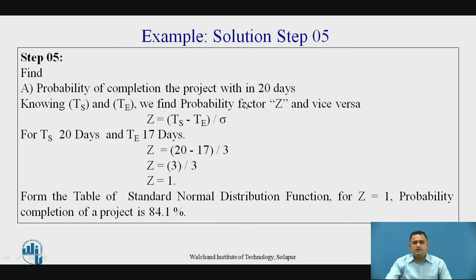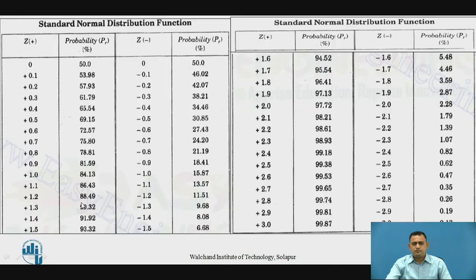Ts is 20 days (scheduled completion time) and Te is 17 days (expected completion time). So Z = (20 - 17) / 3 = 1. The normal deviate Z equals 1. Using the standard normal distribution table, we look up Z = 1 and find the probability completion is 84.13 percent. This is how we define the probability completion time of the project.